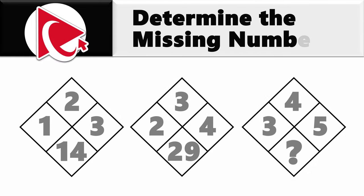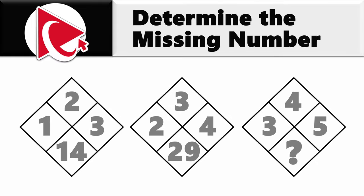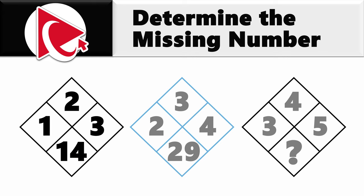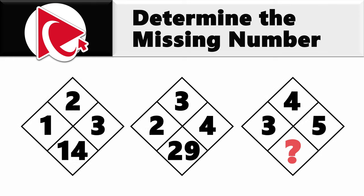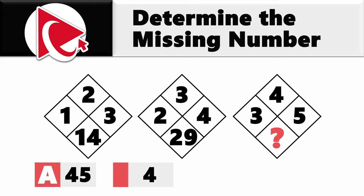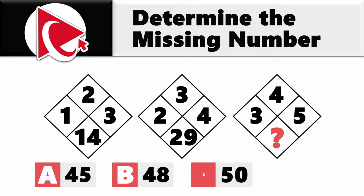You're presented with three diamonds, each having four numbers inside. The first diamond has numbers 1, 2, 3, and result 14. The second diamond has numbers 2, 3, 4, and result 29. The third diamond has numbers 3, 4, 5, and the missing number. Choices: A: 45, B: 48, C: 50, D: 52.